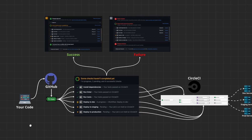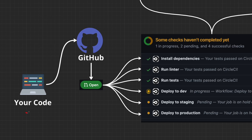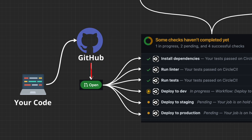Let's start with this high-level diagram to understand how a typical CI/CD pipeline works. You usually start by pulling the repository and making changes locally on your computer. Once your changes are ready, you push them to a source control platform like GitHub, GitLab, or Bitbucket. In our case we'll use GitHub as an example. From there, you open a pull request to the main branch — which could be master, staging, or main — depending on your workflow.